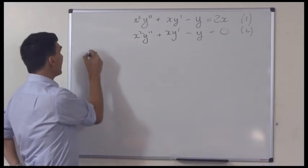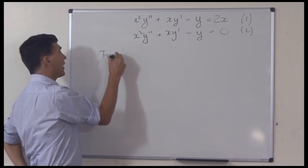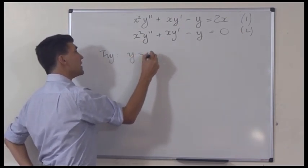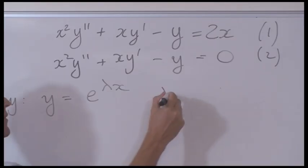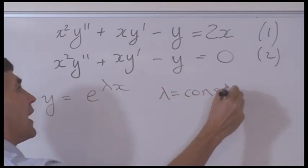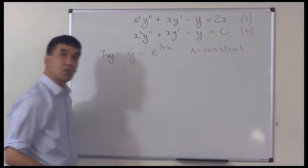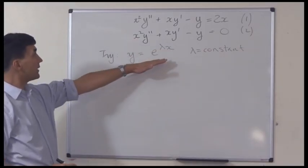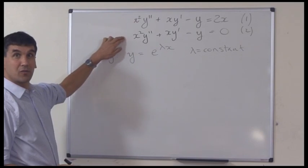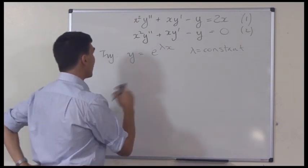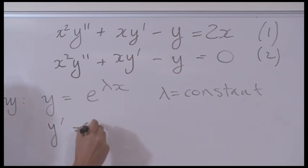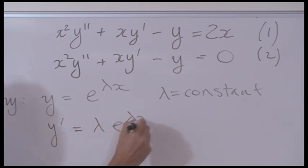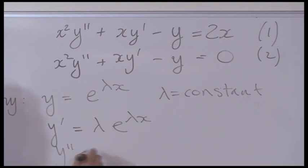Then we'll try y equals e to the lambda x, where lambda is a constant. We'll see if we can find a lambda that solves that homogeneous equation. To do that we need to differentiate, so we get y prime is lambda e to the lambda x, and y double prime is lambda squared e to the lambda x.